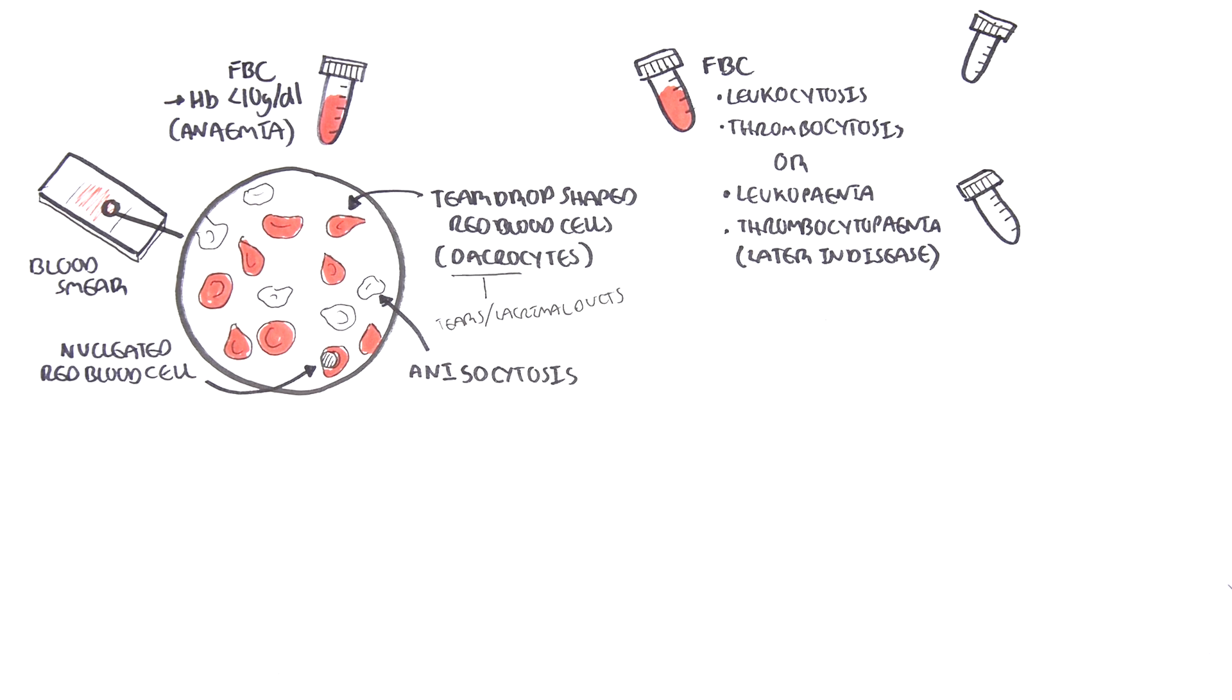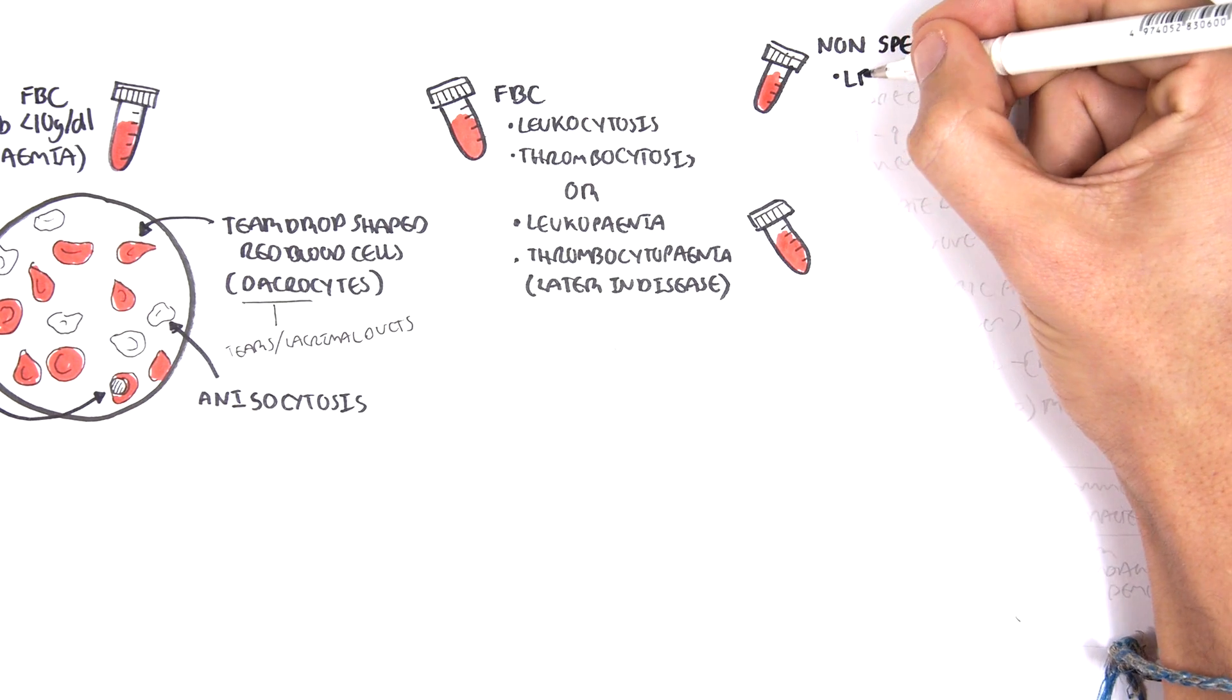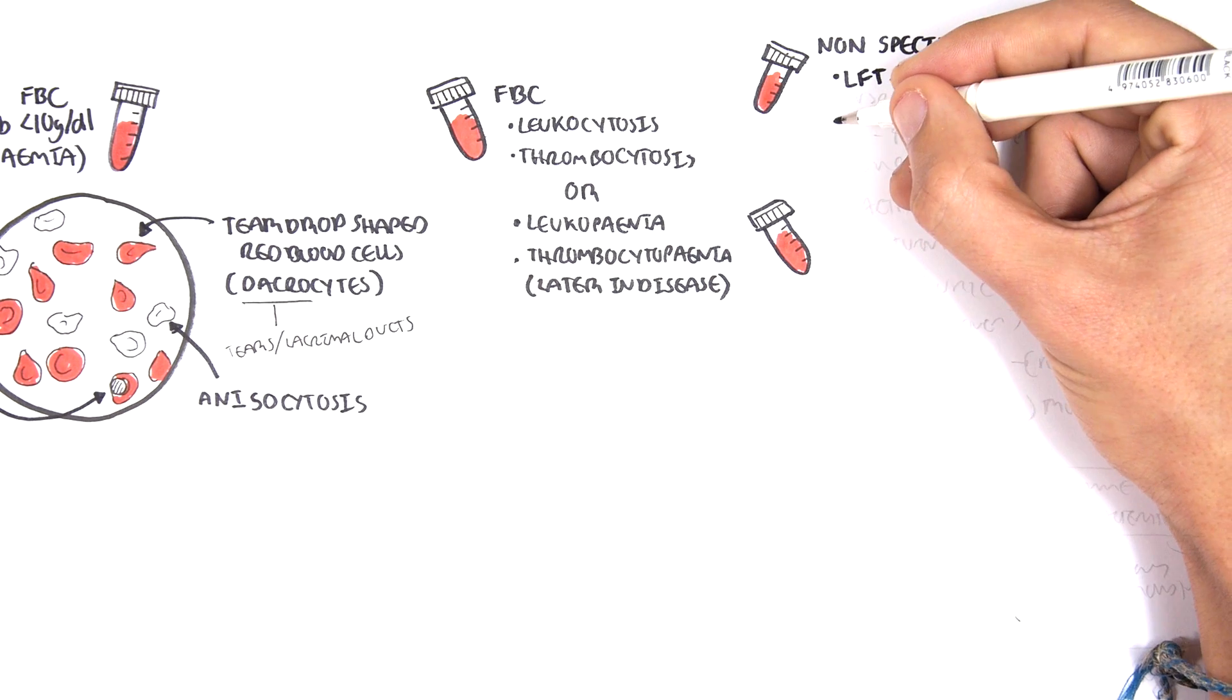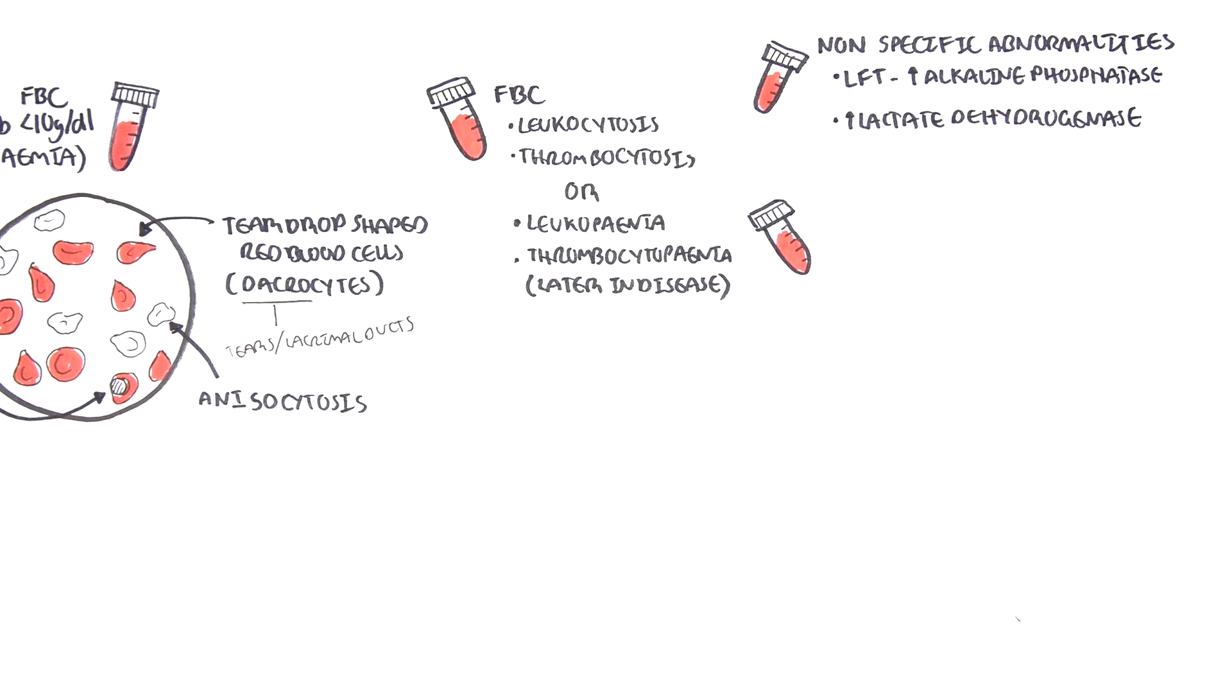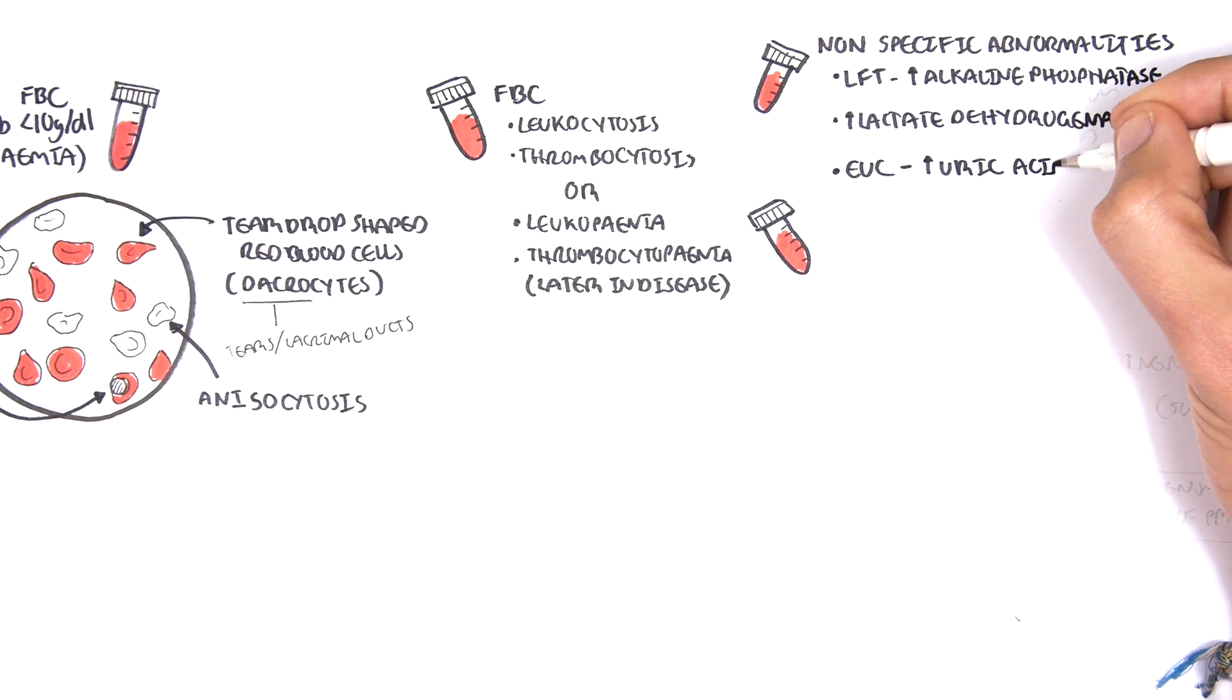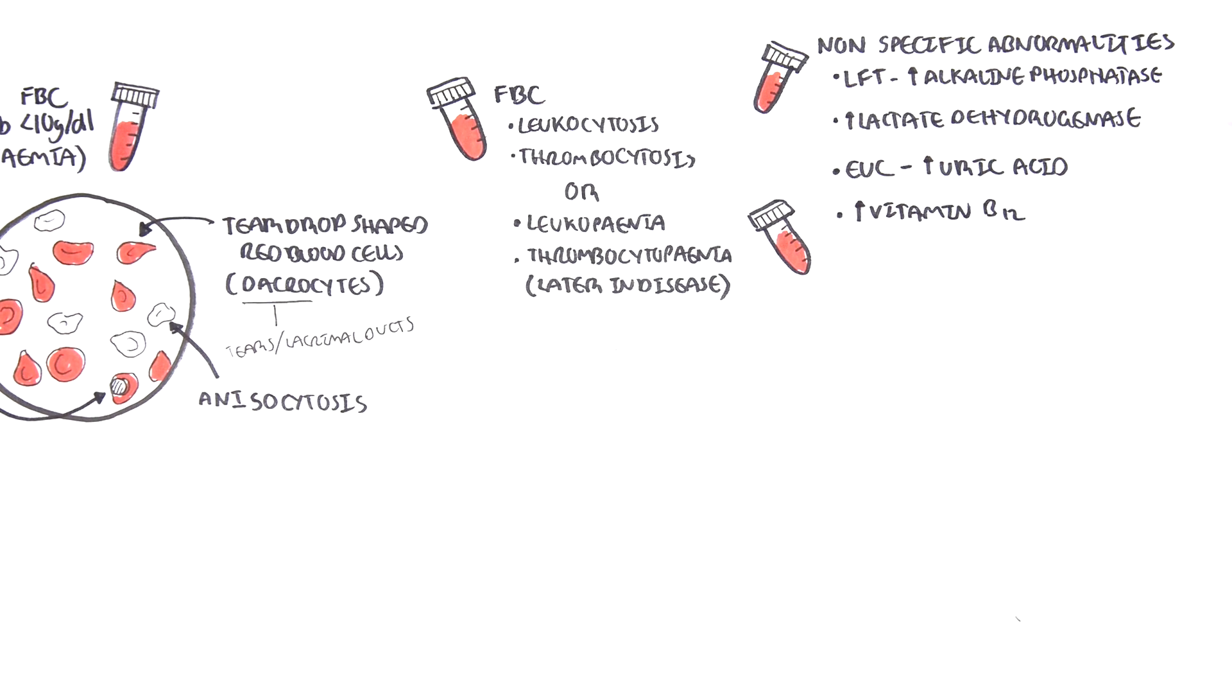Other blood investigations look for nonspecific abnormalities. These include liver function tests, which show an increase in alkaline phosphatase. There can also be an increase in lactate dehydrogenase because of the increase in cell turnover. Electrolyte urea creatinine can show increase in uric acid because of the increase in cell turnover. There can also be increase in vitamin B12 levels, which reflects the increase in neutrophil mass.